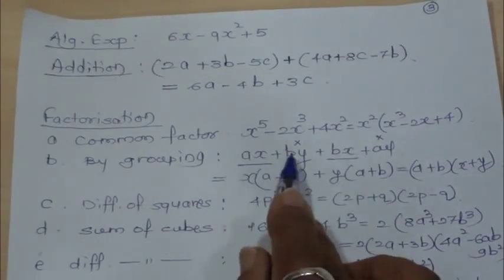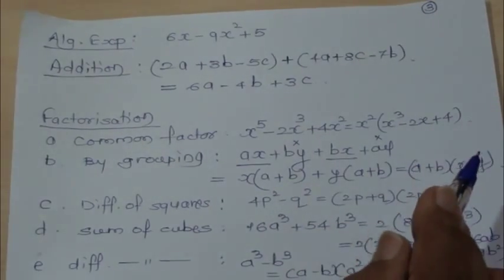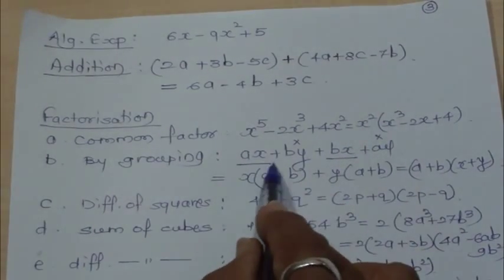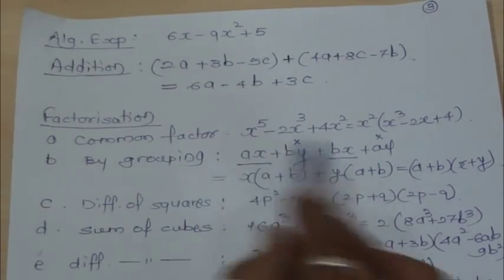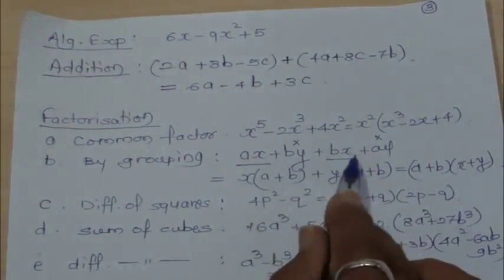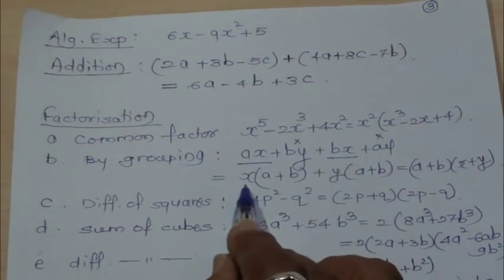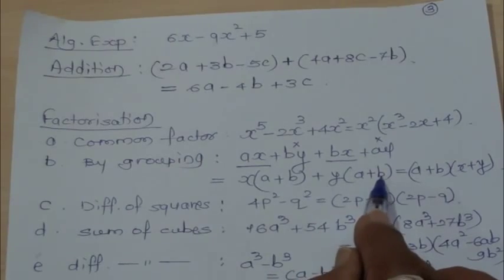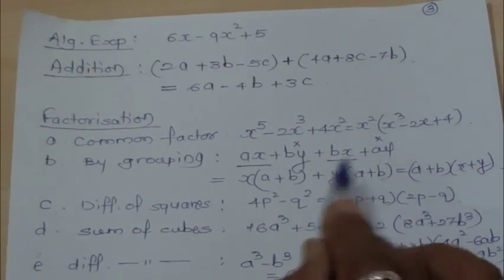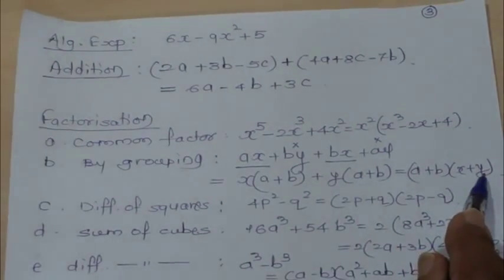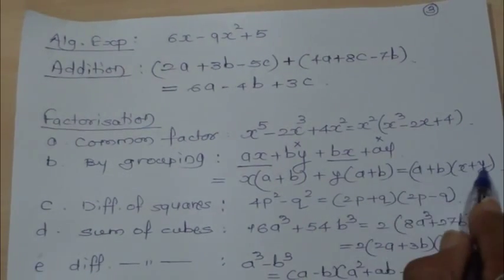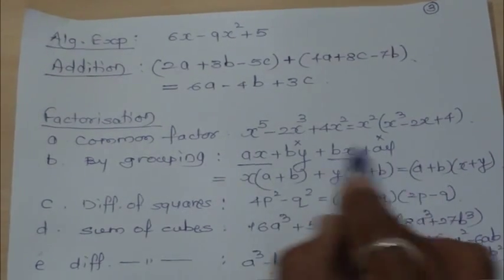The second type is grouping of terms. With four terms ax, bx, ay, by all added — we choose pairs where a common factor exists. ax plus bx: x is common, giving x(a plus b). Then by and ay: y is common, giving y(a plus b). Since both brackets have (a plus b) as common, we take it out to get (a plus b)(x plus y) as the two factor brackets.